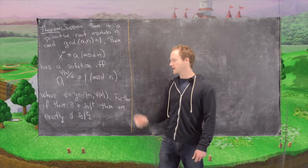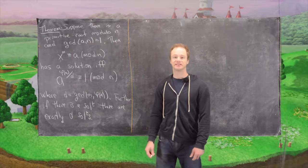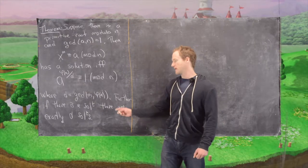Furthermore, if there's any solution at all, then there are exactly d solutions. So we either have zero solutions or we have d solutions.